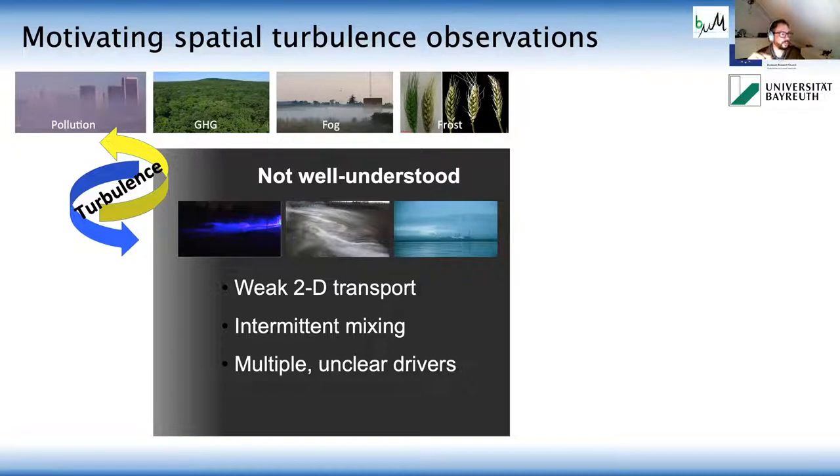This may affect the spread of pollutions, exchange of greenhouse gases, formation of fog or frost damage to crops. So whenever the turbulence is very weak, we don't understand it very well.